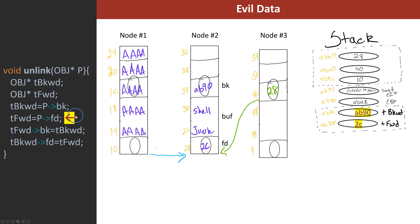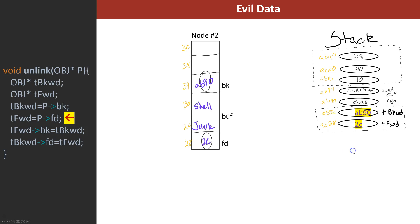With the local variables, AB90 equals T-backward and 2C equals T-forward, and they're on the stack. The other nodes don't really matter at this point - what we're worried about is what's going on in node two, so let's set aside the extra information.